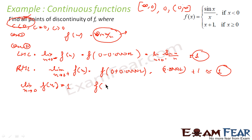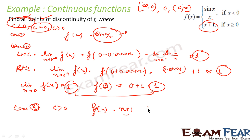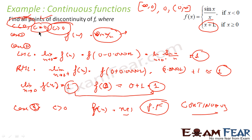Now we check whether it is continuous. We find f(0): putting x equal to 0 in x plus 1 gives 0 plus 1, that is 1. So f(0) equals the limit as x tends to 0, both equal 1, so the function is continuous at x equal to 0. For case 3, c greater than 0, f(x) equals x plus 1, which is a polynomial function, so it is continuous. This function is continuous at all points.